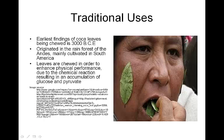Coca originated in the rainforest of the Andes and is mainly cultivated in South America. The leaves are chewed in order to enhance physical performance, due to the chemical reaction resulting in an accumulation of glucose and pyruvate. As you can see on the right, this lady is chewing the coca plant, and also has it wet and sticking to her face — which in some way, shape, or form, she has discovered that it can enter her body several different ways, besides just chewing and letting the enzymes in your mouth digest it orally.